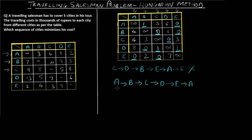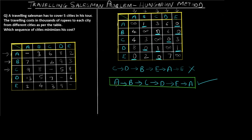All five cities are covered uniquely and exactly once, and the entire chain is complete: A → B → C → D → E → A. This is our required solution — the sequence of locations the salesman will travel.